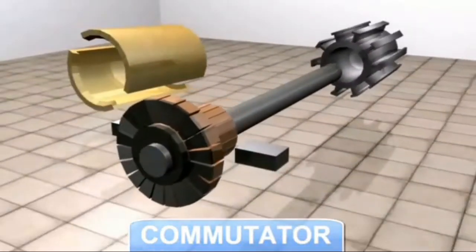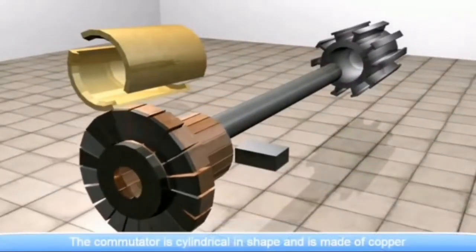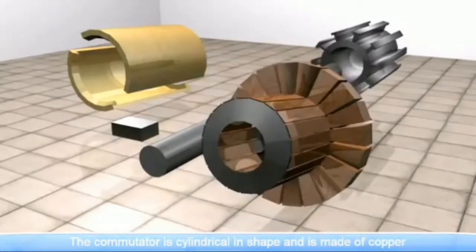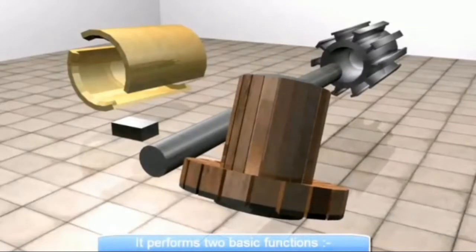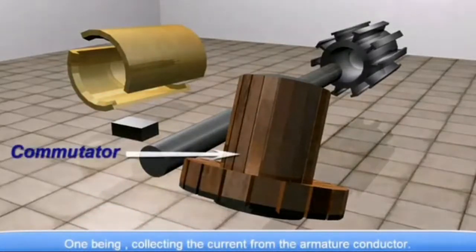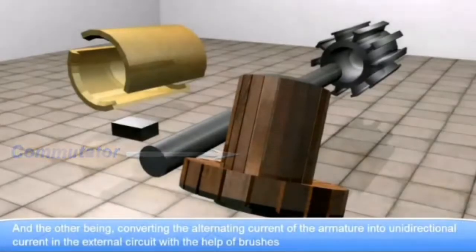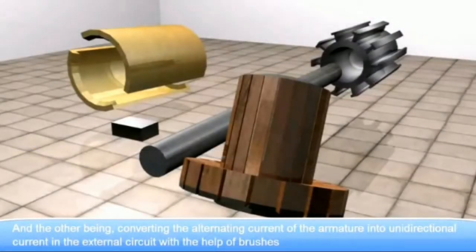The commutator. The commutator is cylindrical in shape and is made up of copper. It performs two basic functions. One being collecting the current from the armature conductor. And the other being converting the alternating current of the armature to unidirectional current in the external circuit with the help of brushes.